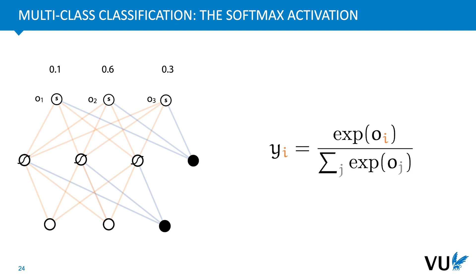To compute the softmax, we simply take the exponent of each output node o_i to ensure that all three of them are positive, and then we divide each of them by the sum total over all output nodes to ensure that all three of them sum to 1. Note that the softmax is a little unusual for an activation function because it's not element-wise like the sigmoid or the ReLU are. To compute the value of one output node, you need to look at the values of the other output nodes as well.